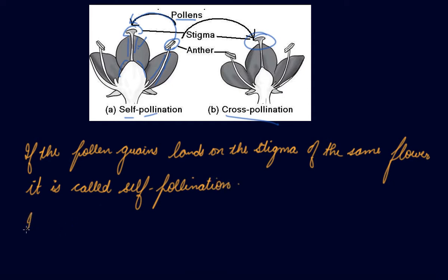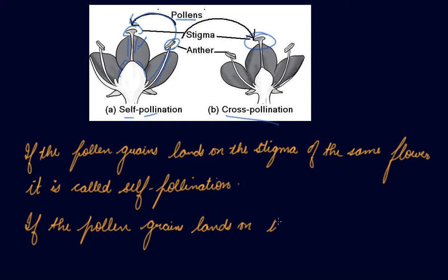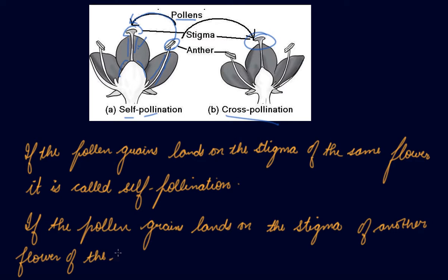If the pollen grains land on the stigma of the same flower, it is called self-pollination. If the pollen grains land on the stigma of another flower of the same plant, then it is called cross-pollination.